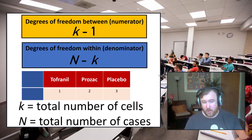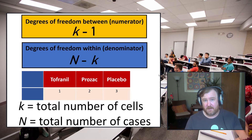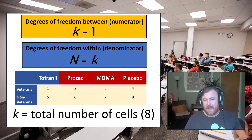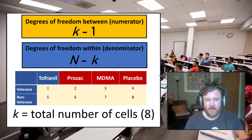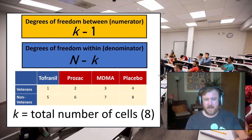Big N is the total number of cases. In our example comparing three levels of antidepressant medication — Tofranil, Prozac, and placebo — there are three cells, so k = 3, and with five people per group N = 15. If we had a factorial design with four levels of treatment type and two levels of veteran status — a 2×4 between-subjects design — there would be eight cells, so k = 8.